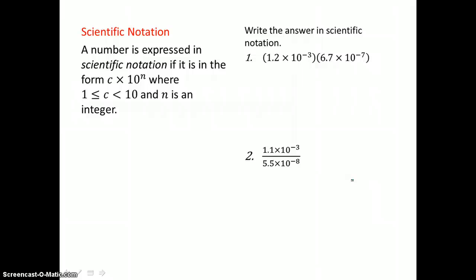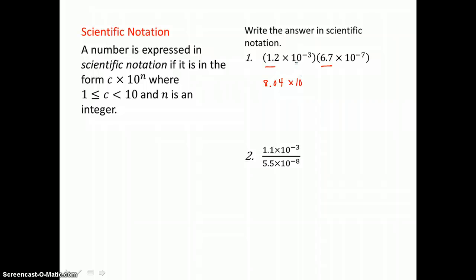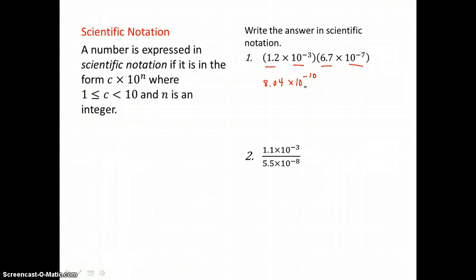Here we're using scientific notation, which is a way of expressing very large or small numbers in shortcut form. In this first example, we want to multiply these scientific notation numbers. When we multiply, we multiply like factors together. So I start by multiplying 1.2 times 6.7 and get 8.04. Then for the powers of 10, we're multiplying like bases again so we add exponents: negative 3 plus negative 7 is negative 10. This result is in scientific notation because I have a number between 1 and 10 times a power of 10, so we're done.